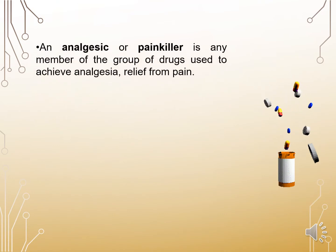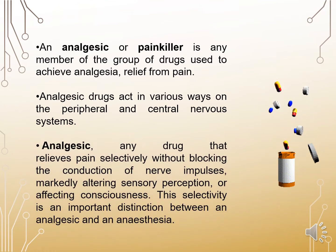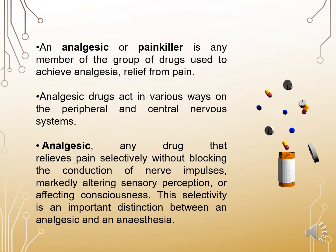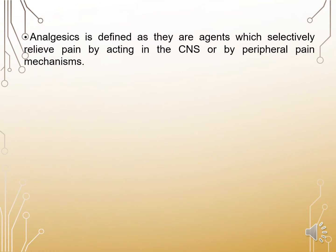An analgesic or painkiller is any member of a group of drugs used to achieve analgesia, meaning relief from pain. Analgesic drugs act in various ways on the peripheral and central nervous system. Any drug that relieves pain selectively without blocking the conduction of nerve impulses, altering sensory perception, or affecting consciousness. This selectivity is an important distinction between analgesics and anesthesia. Analgesics are defined as agents which selectively relieve pain by acting in the CNS or by peripheral pain mechanism.